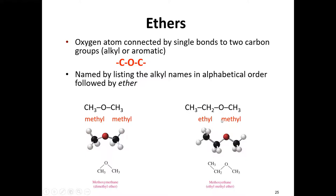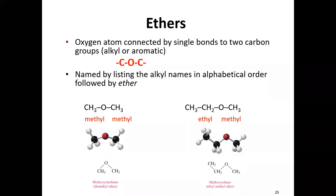With an ethyl group on one side and a methyl group on the other, this would be ethyl methyl ether (common name). For IUPAC names, we call the shorter-chain side an alkyl-oxy group: take the alkyl name, drop the '-yl,' and add '-oxy.' So methyl becomes methoxy. The dimethyl ether in IUPAC becomes methoxymethane.